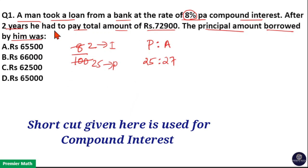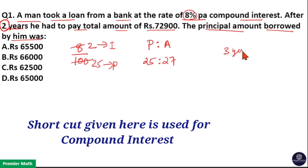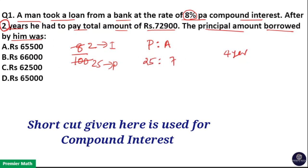The time duration here is 2 years. These parts are for 1 year. If you have 2 years, square it — that is 25 squared and 27 squared. If it is 3 years, then 25 cubed to 27 cubed. If it is 4 years, then 25 to the power 4 and 27 to the power 4. If it is 5 years, then 25 to the power 5 and 27 to the power 5. Take it that way.